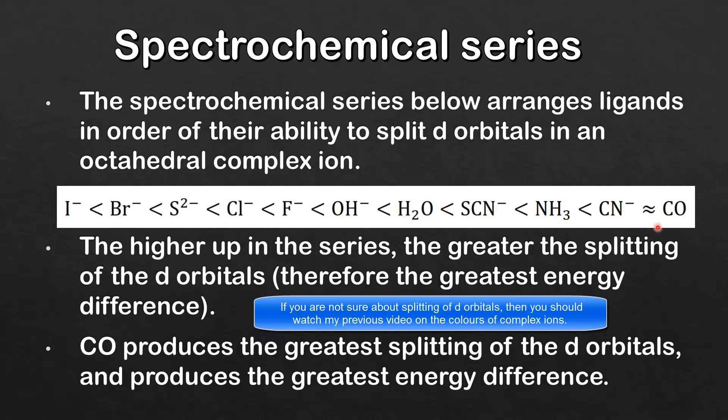In this spectrochemical series, carbon monoxide produces the greatest splitting of the d orbitals and produces the greatest energy difference between the two sets of d orbitals. The iodide ion produces the least splitting of the d orbitals and therefore the least energy difference between the two sets of d orbitals.